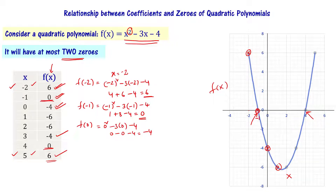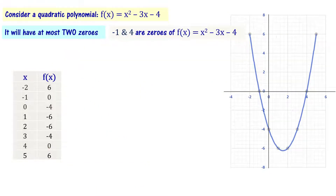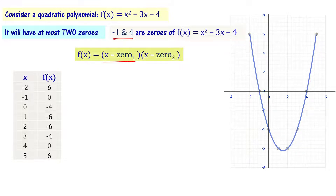The curve crosses the x-axis at x equal to minus 1 and x equal to 4, where f of x value becomes 0. So wherever f of x equals 0, that x is called a zero of the polynomial. Therefore, minus 1 and 4 are zeros of the given polynomial x square minus 3x minus 4.